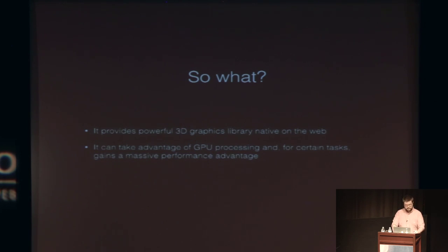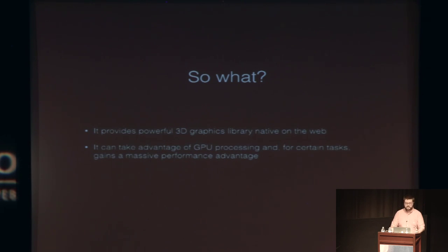What does that mean for us? It means we get a powerful 3D graphics library that's native on the web, which is one great use case for using WebGL over the DOM. And then there's our use case, which is that the DOM just doesn't provide the performance profile we really need. So we're going to use it — and it is the best tool for the job in our case.